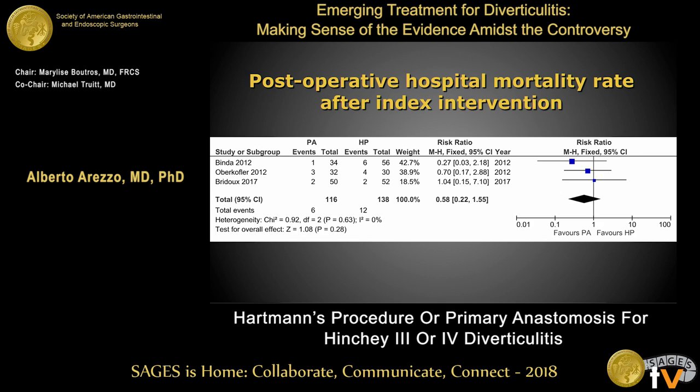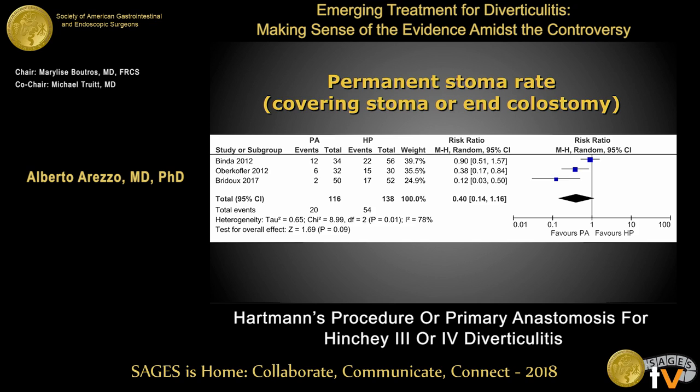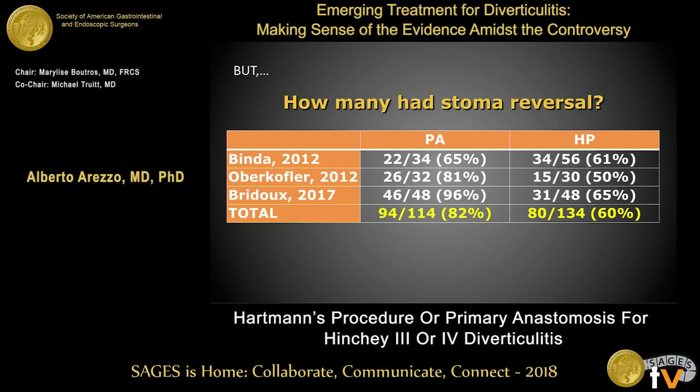Postoperative hospital mortality rate after the index intervention was slightly in favor of primary anastomosis, but no significant difference could be detected. Permanent stoma rate was clearly much less reported in the primary anastomosis group, but again we could not see significance, which in my opinion is strictly related to the fact that 82% received stoma reversal in the primary anastomosis group, compared to only 60% in the Hartmann procedure group — a somewhat inflated percentage since these were randomized patients, pushing surgeons to reverse stomas more than they otherwise would.